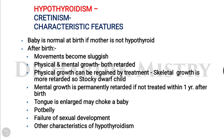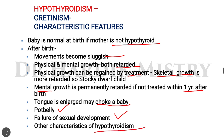The baby is normal at birth if the mother is not hypothyroid during pregnancy. After birth, if hypothyroidism develops, characteristic features include: sluggish movements, retarded physical and mental growth. Deficient physical growth can be regained by treatment, but skeletal growth is more retarded — the child becomes a stocky dwarf. Mental growth is permanently retarded if not treated within one year after birth. Features also include an enlarged tongue that may choke the baby, pot belly appearance, and failure of sexual development.